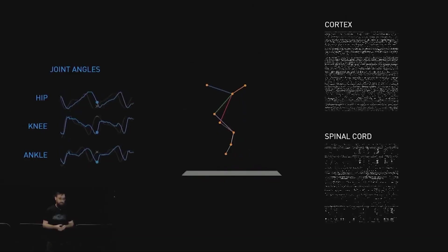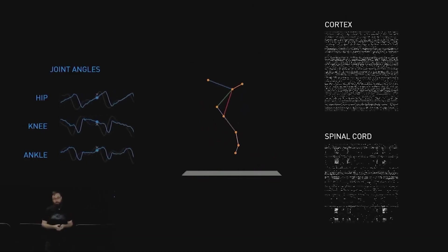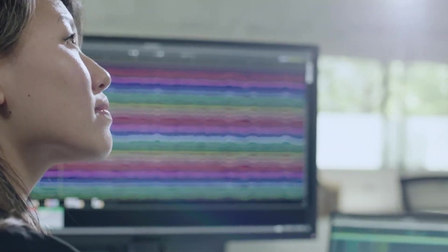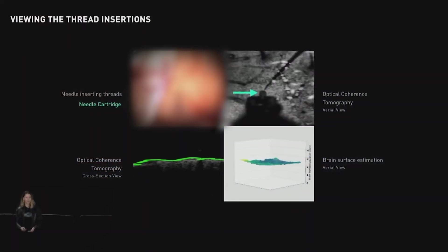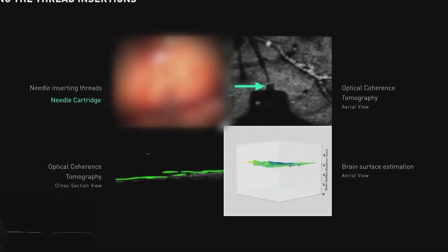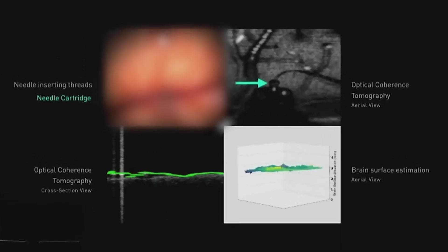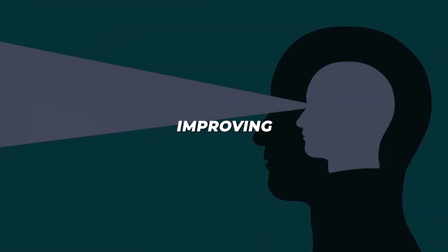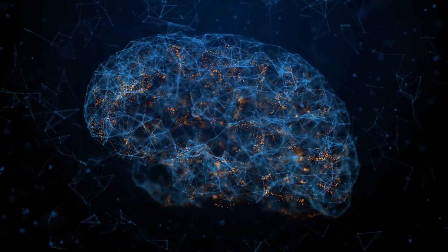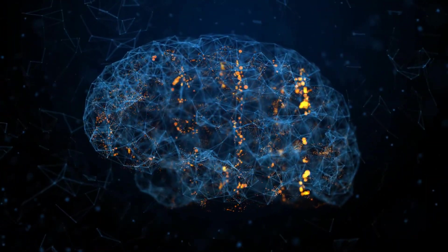Moreover, Neuralink's system is designed to be bi-directional, capable of both reading neural activity and stimulating neurons. This two-way communication could allow for real-time adjustment and optimization of the visual signals, potentially improving the quality of the perceived images over time as the system learns and adapts to the user's brain.